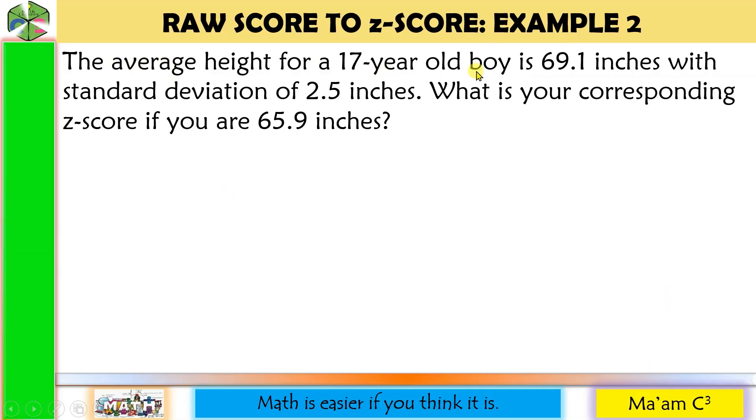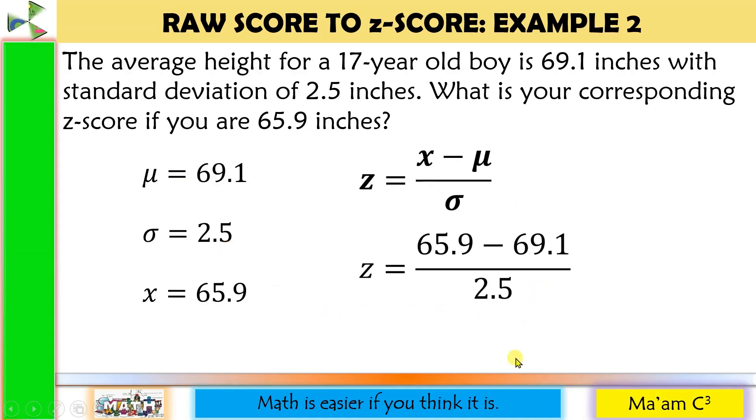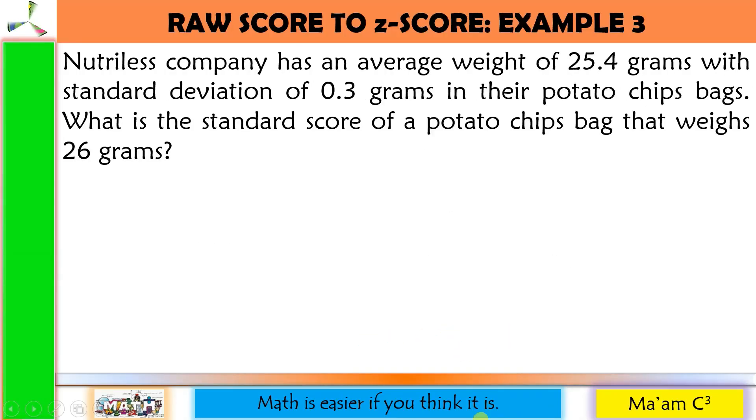Our mu, the average, or the mean is 69.1 inches. The standard deviation, this is our sigma, 2.5 inches. What is your corresponding Z-score if you are 65.9 inches? So this is your height. This is the raw score. So X is equal to 65.9. Again, the formula. Now let us substitute. 65.9 minus 69.1 divided by 2.5. Computing this in our calculator, it will give us negative 1.28.